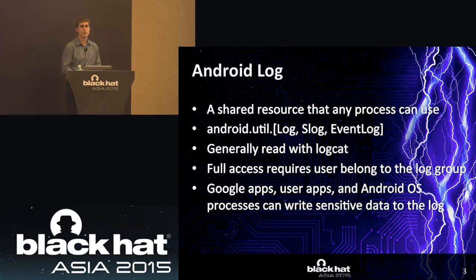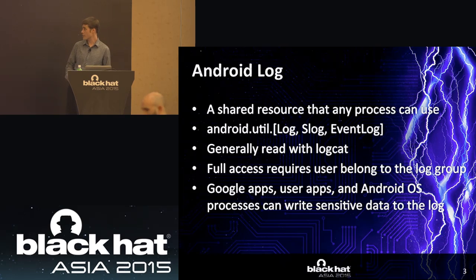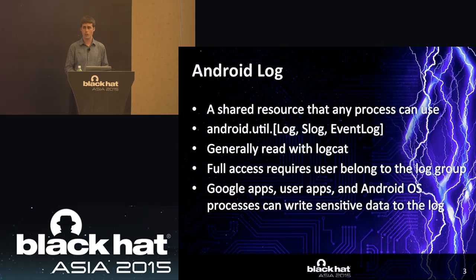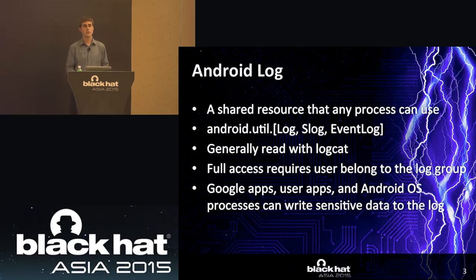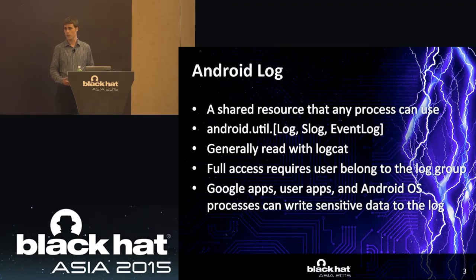The Android log is mostly used for debugging. In your application, when you reach certain states or an unexpected event occurs, you would generally want to write something to the log. Crash dumps also go to the log, so a developer can get feedback and improve the program. Any process on the Android OS can write to the Android log. You use it via the standard Android API — android.util.log for the main log, Slog for the system log, an event log for the event log, and certain log tags go into the radio log. Generally you read it with logcat, which translates log buffers from binary to plain text format.